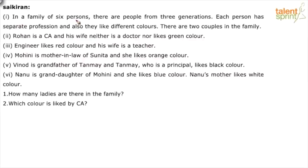In a family of six persons, there are people from three generations. Each person has a separate profession and they like different colors. There are two couples in the family. Rohan is a CA and his wife neither is a doctor nor likes green color.